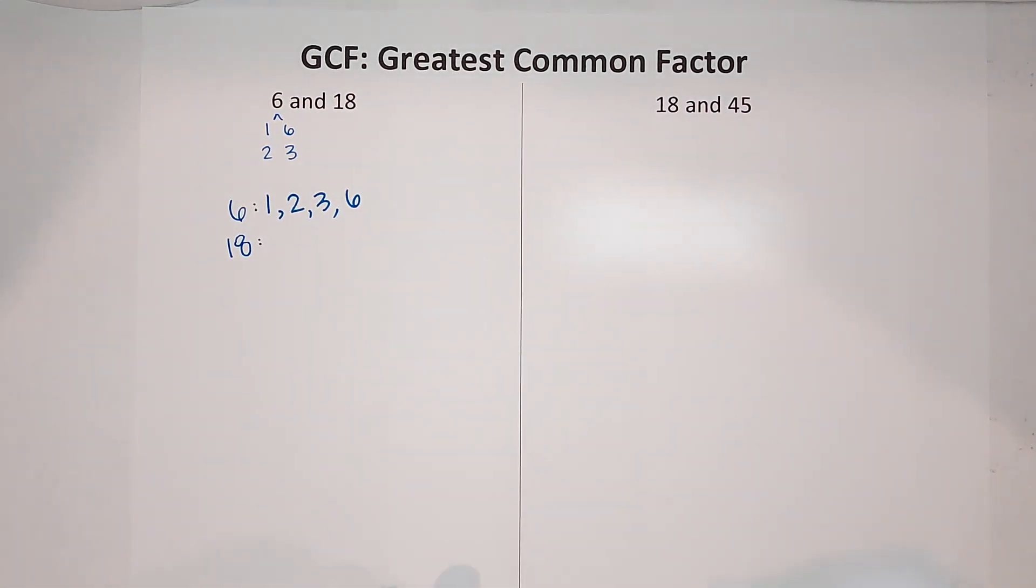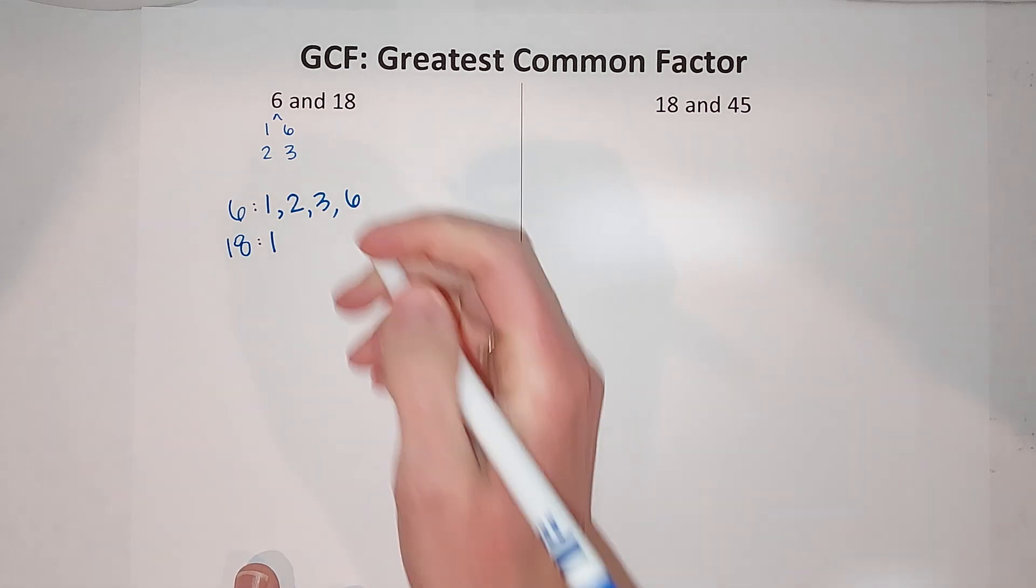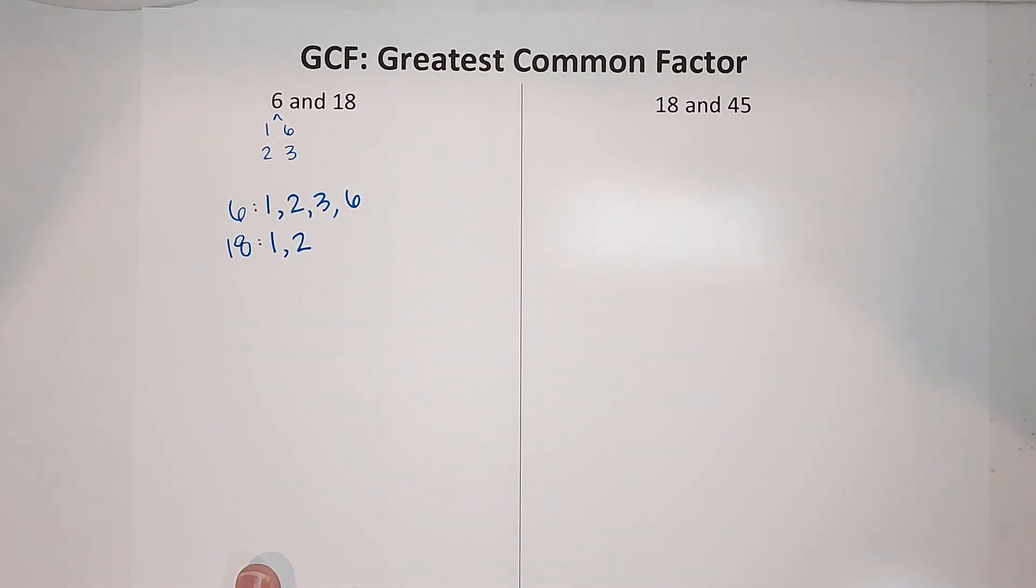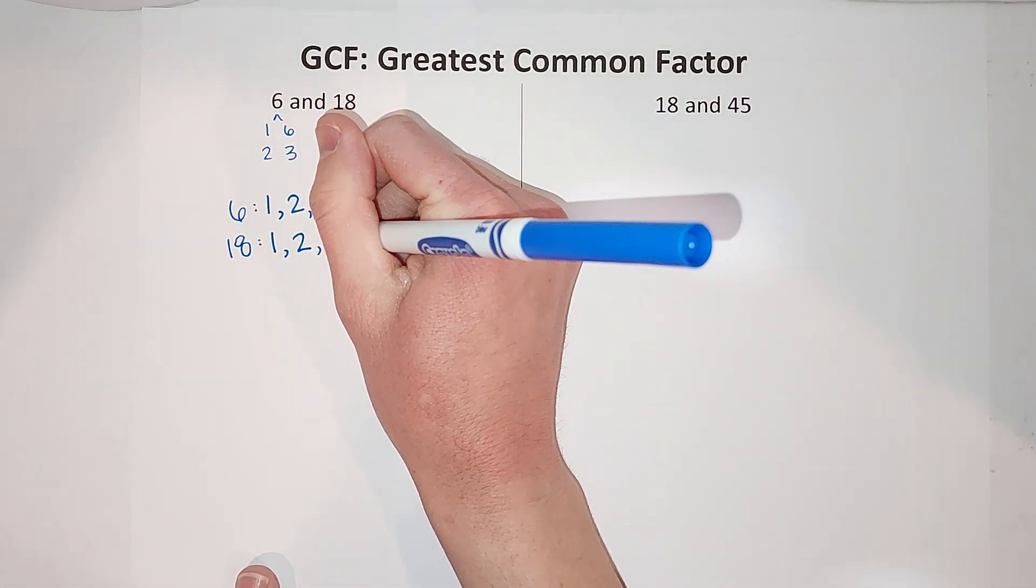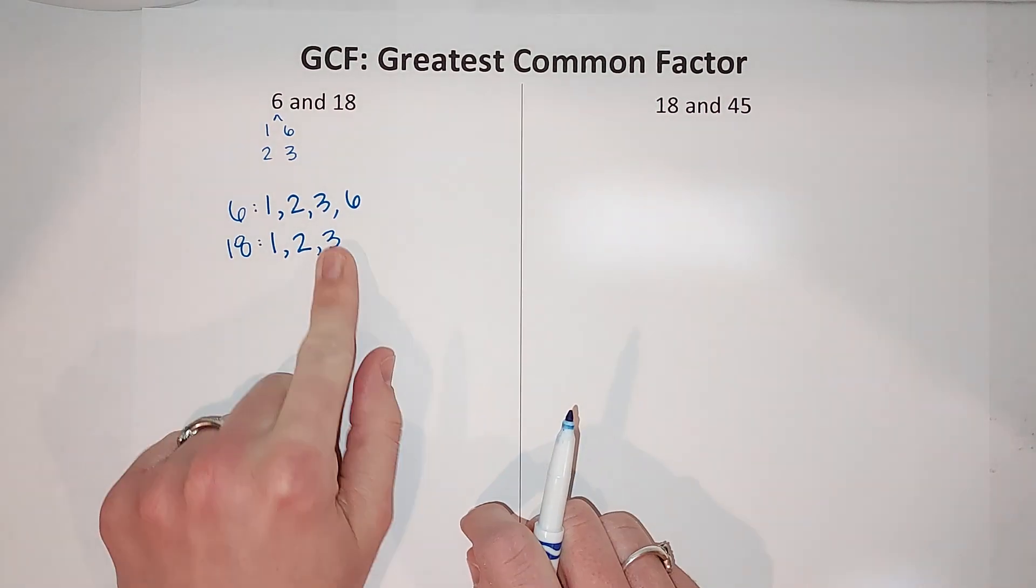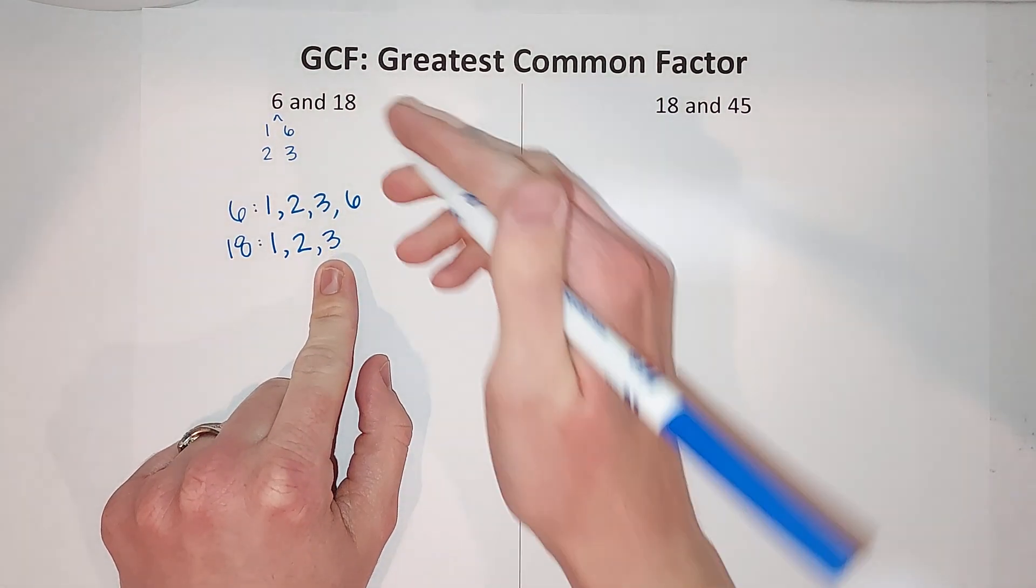Now the factors of 18. I know 1 times 18 is 18, 2 times 9 is 18, also 3 times 6 is 18. 4 doesn't go into 18, 5 doesn't go into 18.